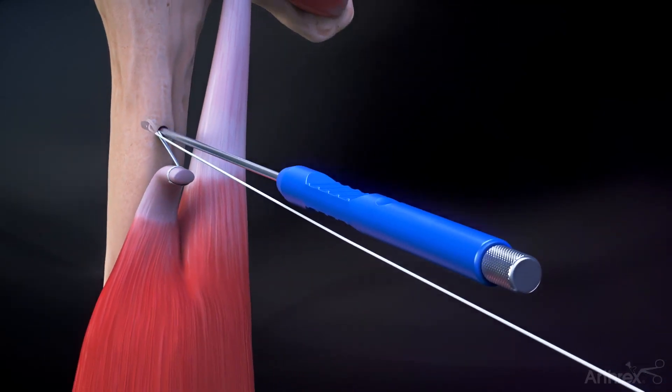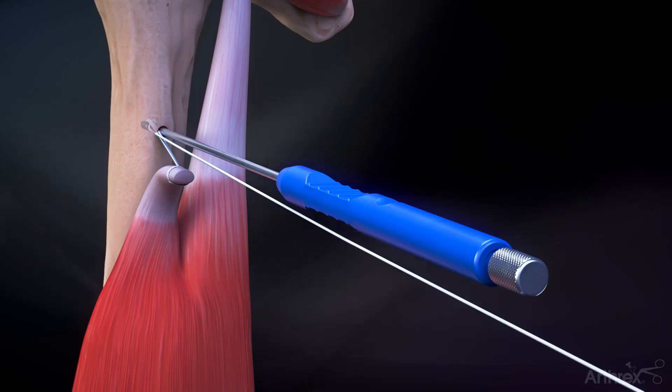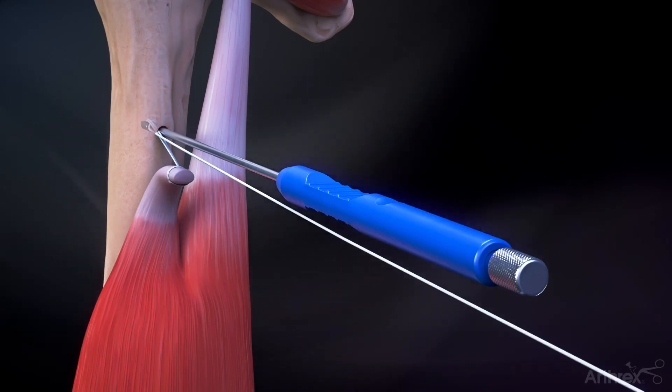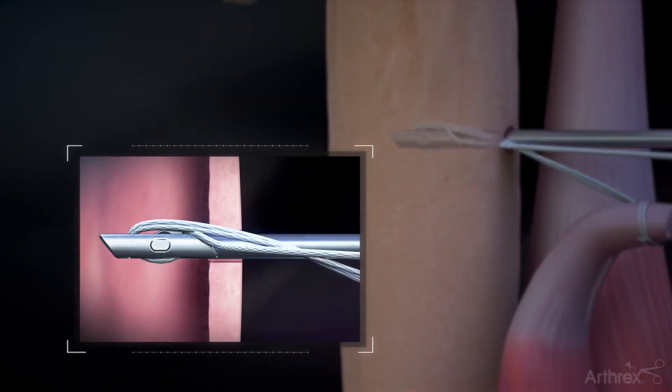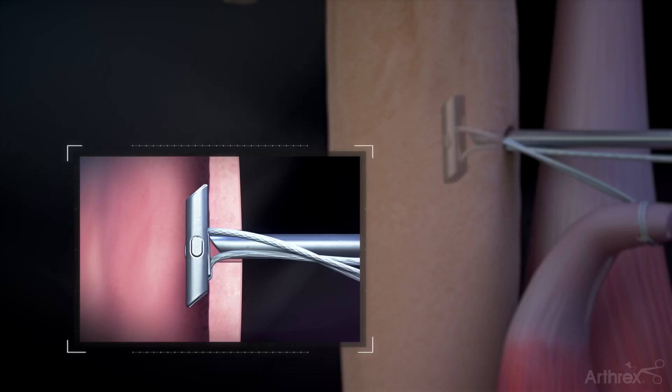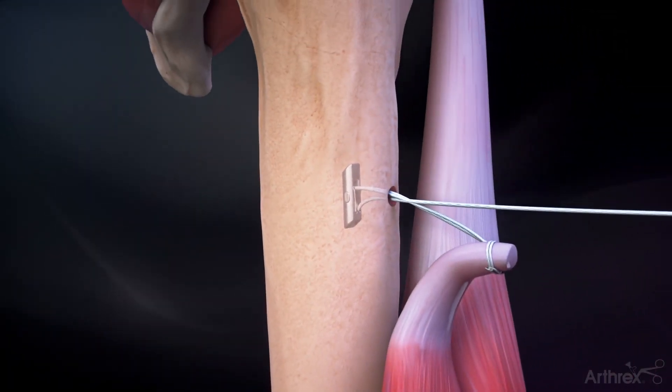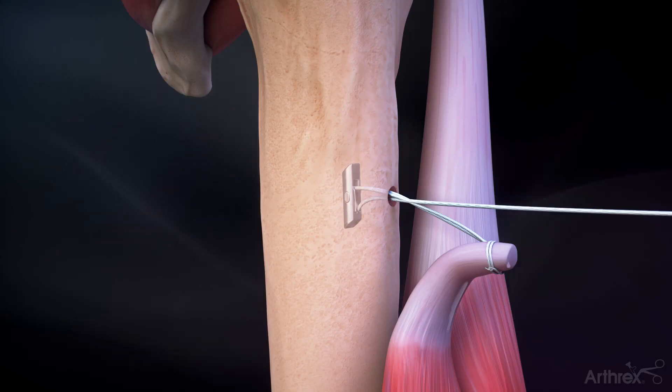Insert the button into the tunnel. Turn the threaded inserter counterclockwise to release the button. Remove the threaded inserter. Pull on the suture to flip the button in the canal. Remove the inserter shaft once the button is deployed against the near cortex.